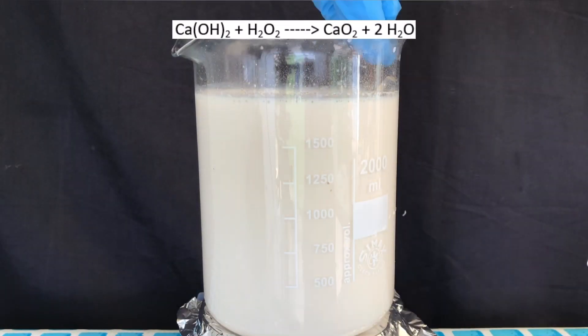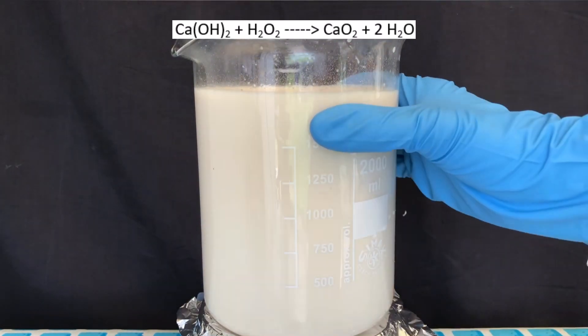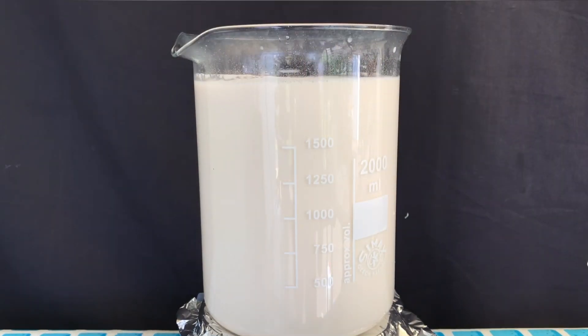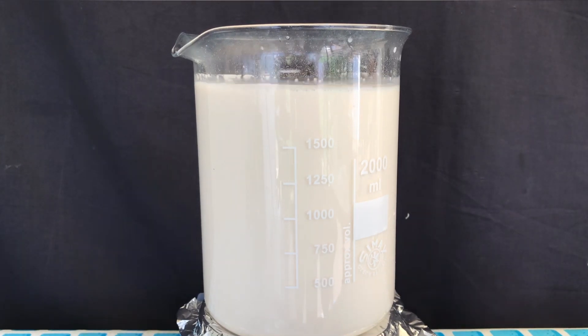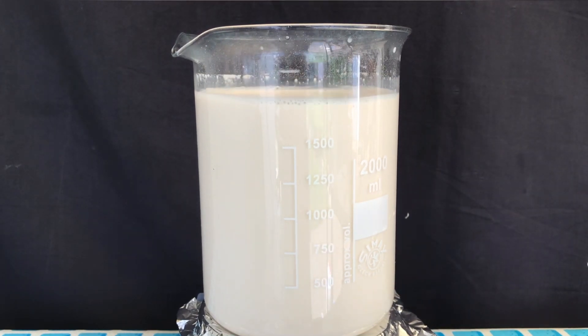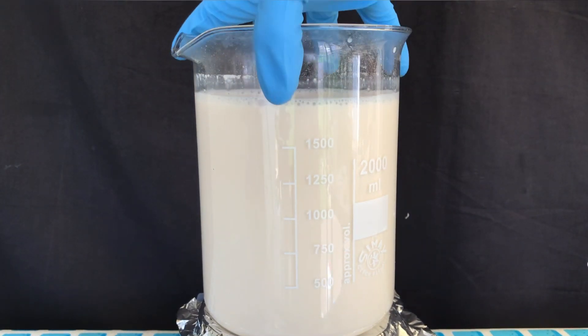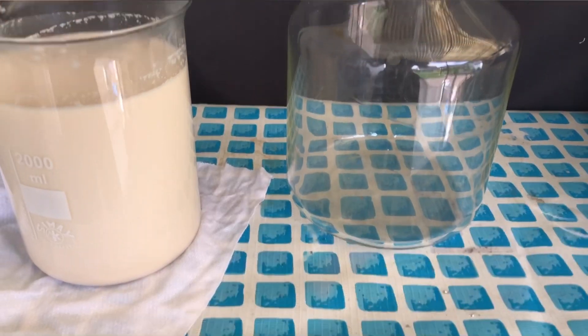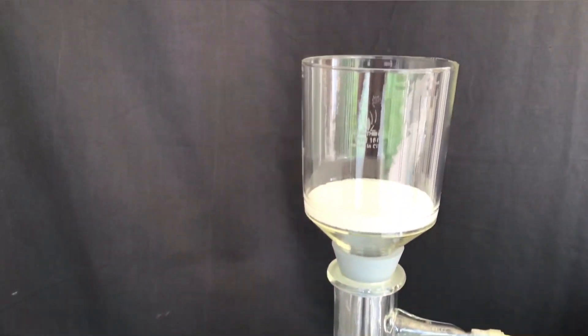By now, I haven't talked about the first step. The calcium hydroxide reacts with the hydrogen peroxide to form extremely insoluble calcium peroxide and water. To increase the purity of the product even further and because a lot of hydrogen peroxide has already decomposed, we added 250 milliliters of additional 11.9% hydrogen peroxide.